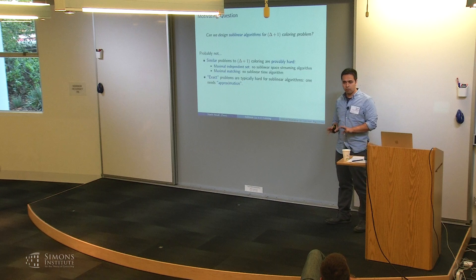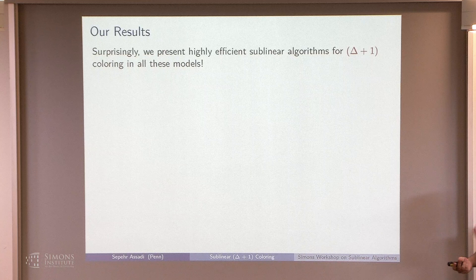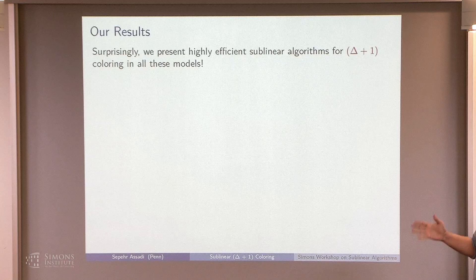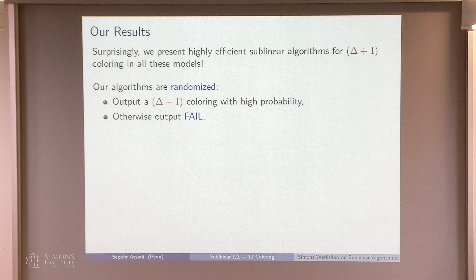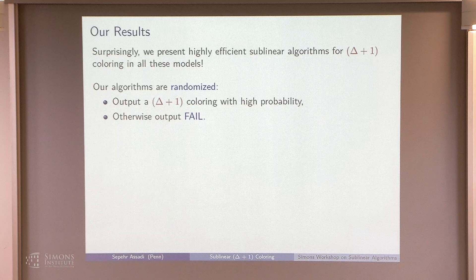Surprisingly, it turns out we can get sublinear algorithms for this problem. Our algorithms are all randomized — they obtain a delta plus one coloring with high probability, or output that they failed. They are never going to output a coloring that is not feasible. This is important in sublinear algorithms because checking whether a given coloring is feasible is provably impossible in these models.